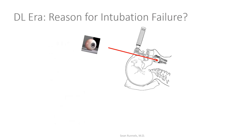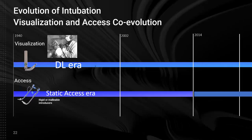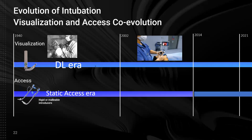Why did we fail during the DL era, and why do we fail with DL now? It's a failure of visualization. If you can't see the vocal cords, you can't even try for access. Almost all of our failures failed at the visualization point. That's the pressure that drove the next evolution of the visualization line — the video laryngoscope. Now we can indirectly view and look around that corner, which began the VL era of intubation.